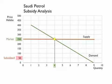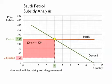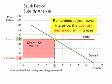Some people might look at this and simply say it would cost 200 halalas per gallon, and the subsidy would simply be 200 times 4, or 800. This actually would be wrong, and the reason it's wrong is we have to remember that as you lower the price, the quantity demanded is going to increase.